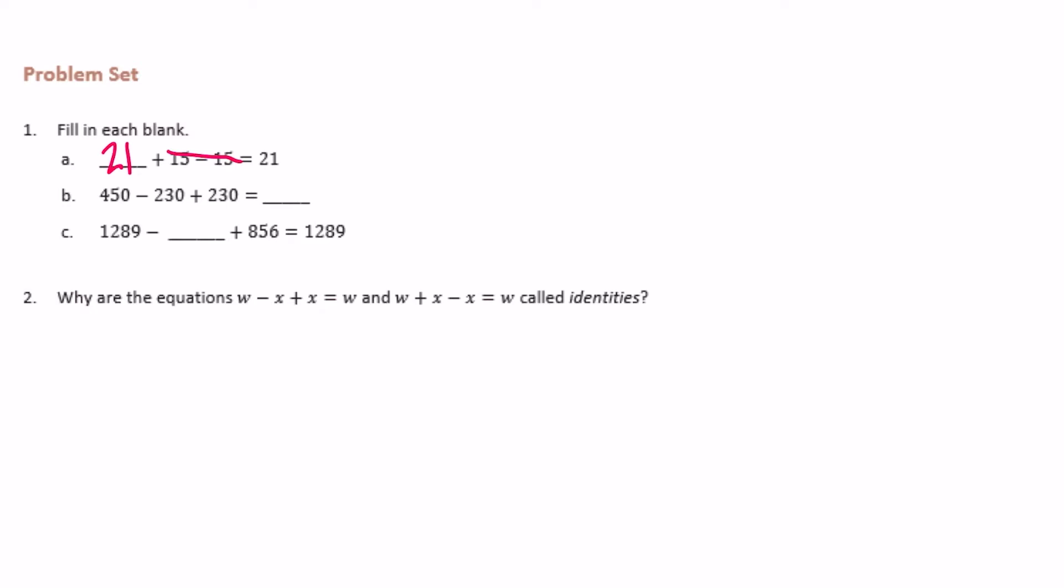450 minus 230 plus 230 equals. So again, negative 230 plus 230 is going to be zero. So 450 minus zero is going to be equal to 450.